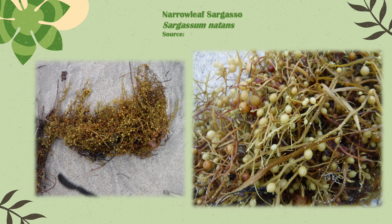This is narrowleaf sargasso, Sargassum natans. I didn't get a 100% credible source on this — the most credible I got to was iNaturalist — but I narrowed it down to two different species of sargassum, and this narrowleaf species is what my photos best matched. The sargassum genus in general is a habitat and feeding ground for several different aquatic organisms.